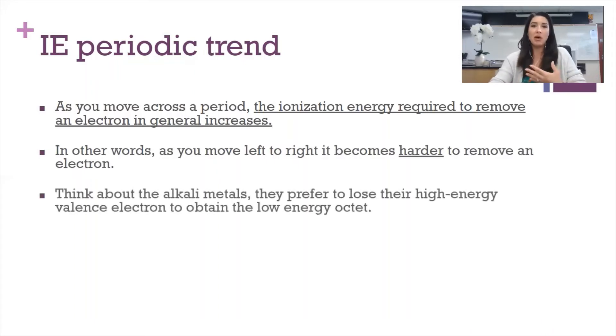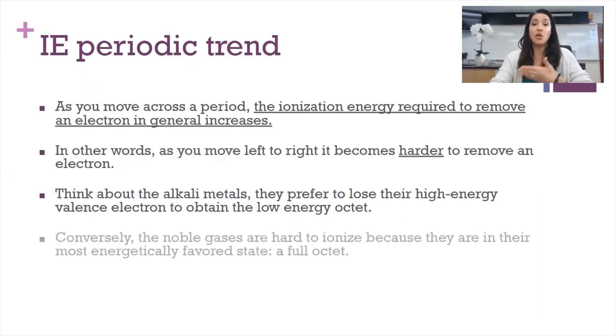So if you think about our alkali metals, that first column, that first group on the periodic table, they are over their valence octet by one electron. So it's actually advantageous for them to get rid of that electron and then fall back to a stable octet. So they're very highly likely, it's not going to take a lot of energy to get that electron. Conversely, the noble gases are very difficult to ionize because they already have a stable octet of eight electrons in their highest energy level. And they're good with that. They're in their most favorable state. So it'll take a really good amount of energy in order to add and remove electrons to those noble gases.